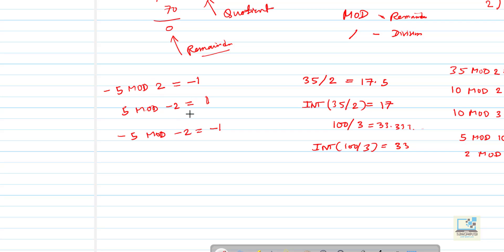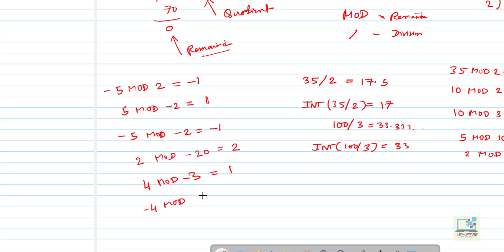You don't have to look at the second number being negative — only the first number matters. For example, 2 mod minus 20: the first number is not negative, so do 2 mod 20 — first number is smaller than second, answer is 2. Another example: 4 mod minus 3 — just do 4 mod 3, three 1s are 3, remainder is 1, not minus 1 since the first number is positive. But minus 4 mod 3: remainder is 1 and since the first number is negative, the answer is minus 1.